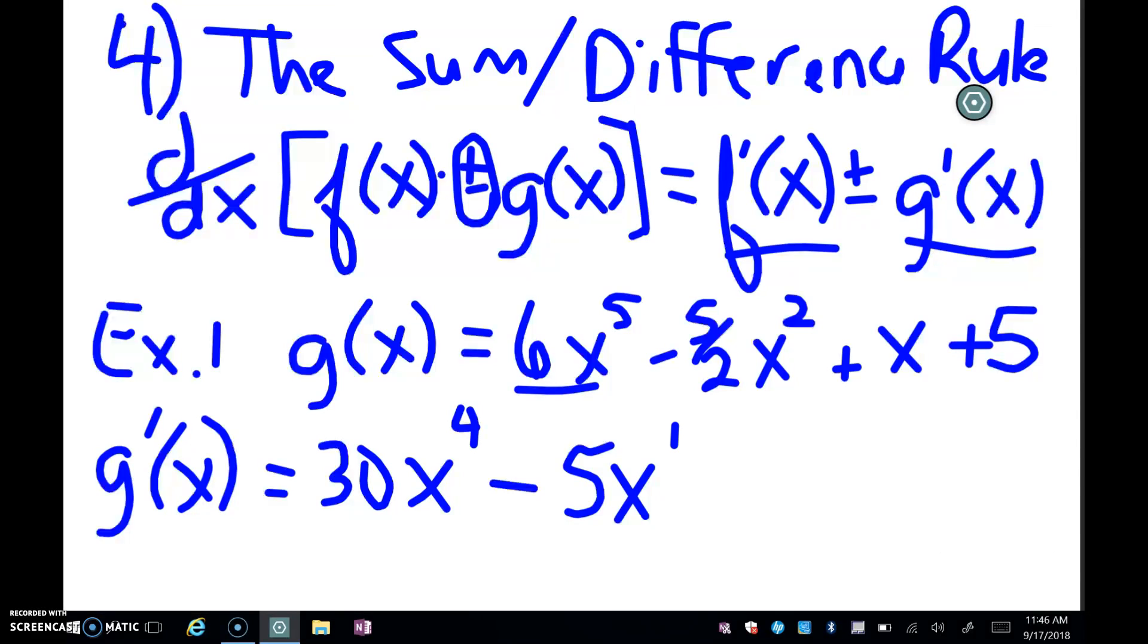Remember, x is understood to have a 1 in front. So 1 in front, 1 power. So if I bring the 1 down, I just get x. And if I take 1 off the power, I get a 0 power now. And remember, for a standalone constant, the derivative is 0.